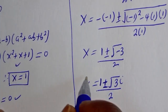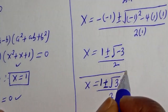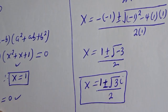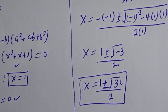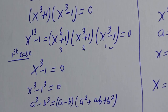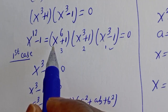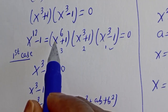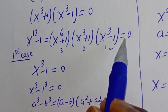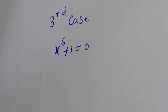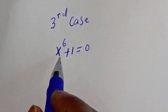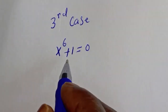This is another value of s. Now let's consider the last case, which is the third case. The third case is s raised to power 6 plus 1 is equal to 0.